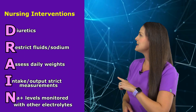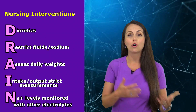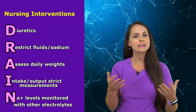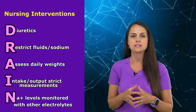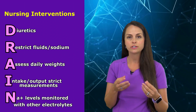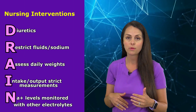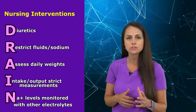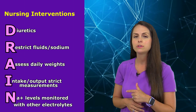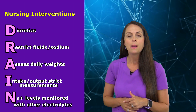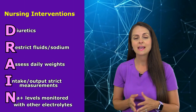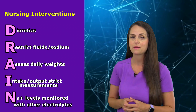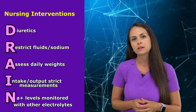N is for sodium level monitored along with other electrolytes. We can throw these patients into electrolyte imbalances — sodium can be naturally diluted due to the fluid volume overload, and we want to make sure it doesn't get too severe or progress to hyponatremia. Also, since we're giving diuretics like loop diuretics — which waste potassium — we want to ensure the patient isn't experiencing hypokalemia.